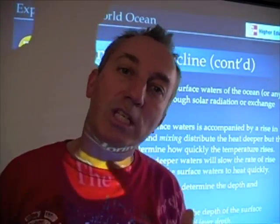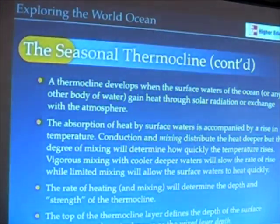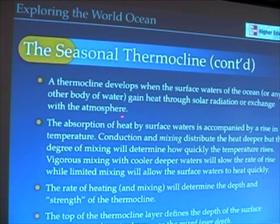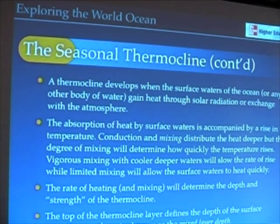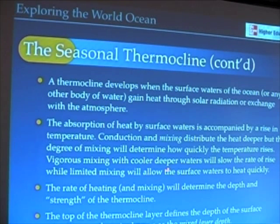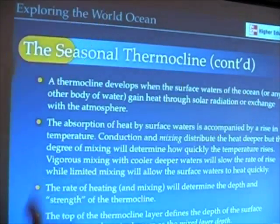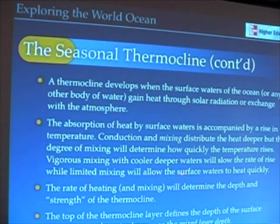That thermocline is called the seasonal thermocline. The absorption of that heat may be slowed down if we have winds or other processes that distribute heat deeper, but ultimately that thermocline develops. It's the rate of heating and mixing that determines how quickly and how strong — what the gradient of temperature is — across that thermocline.